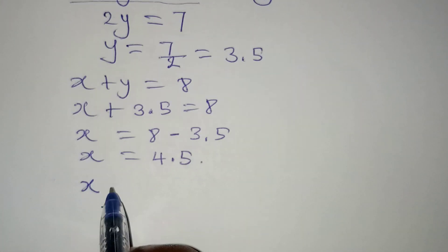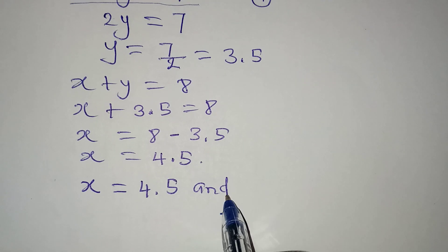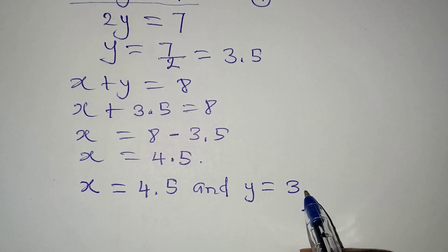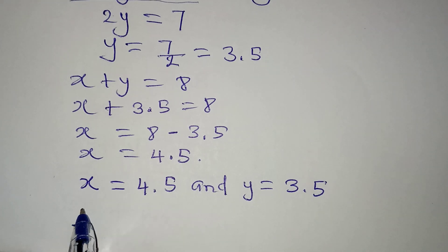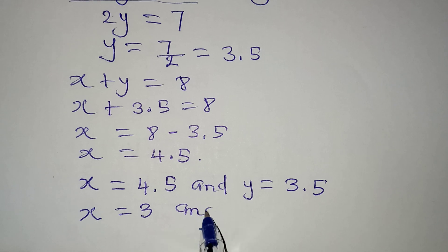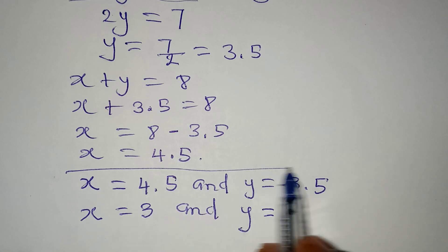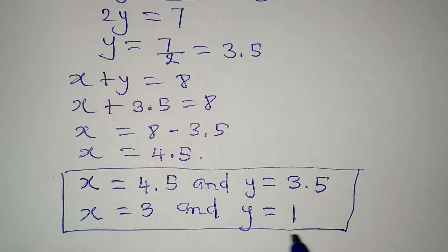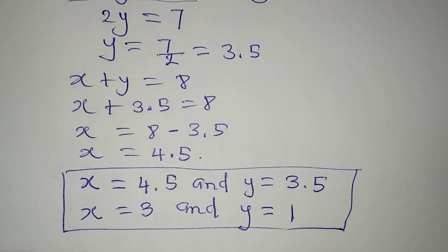So these are the two solutions: x equals four point five and y equals three point five, and also x equals three and y equals one. Both of these pairs satisfy the equation given to us. You can check it out yourself — thank you for watching.